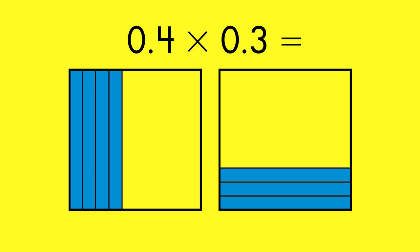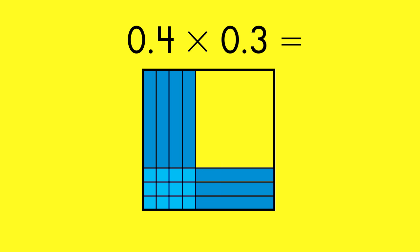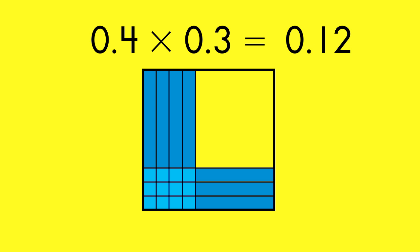To multiply 4 tenths by 3 tenths, just lay one model on top of the other. This creates 12 overlapping hundredths, which demonstrate that 4 tenths multiplied by 3 tenths is 12 hundredths.